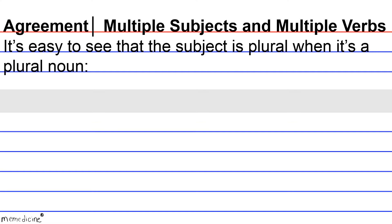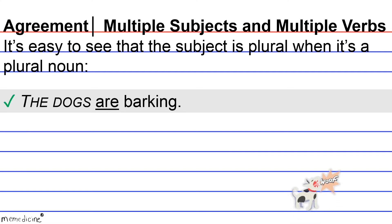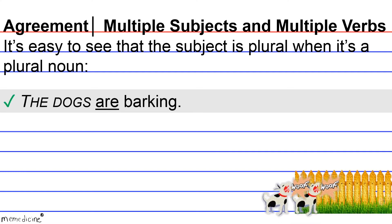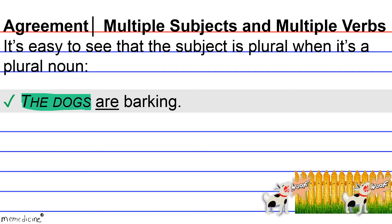For example, the dogs are barking. Here we have our plural subject, the dogs, and our plural verb phrase, are barking.